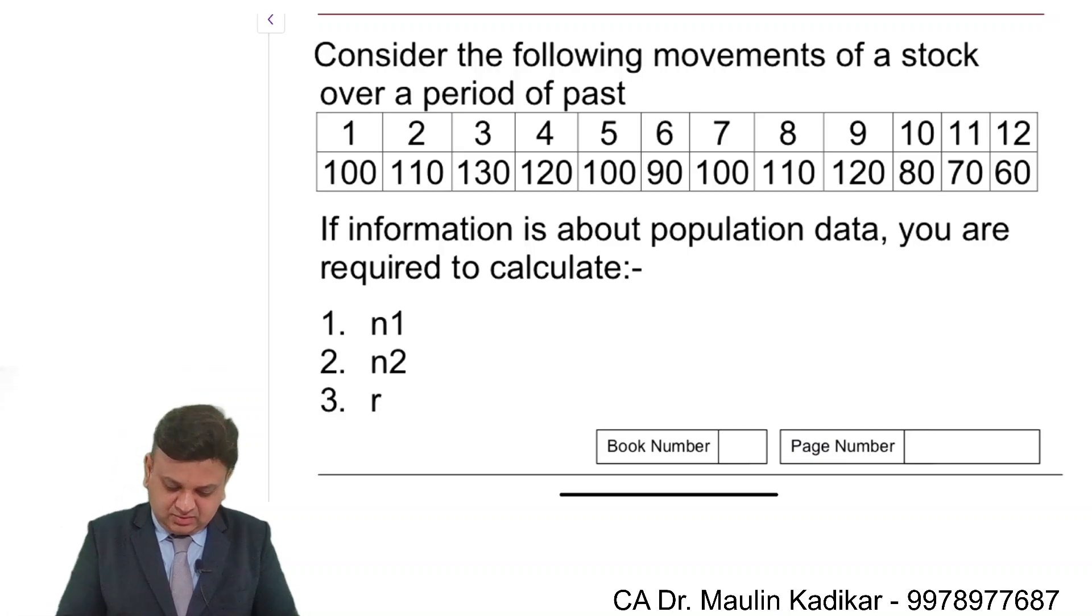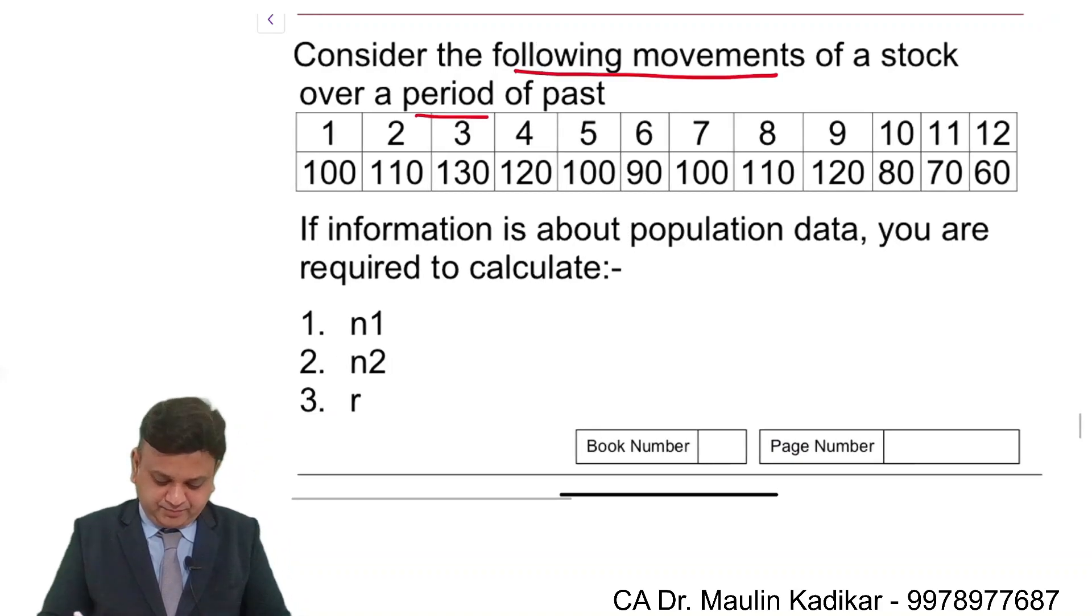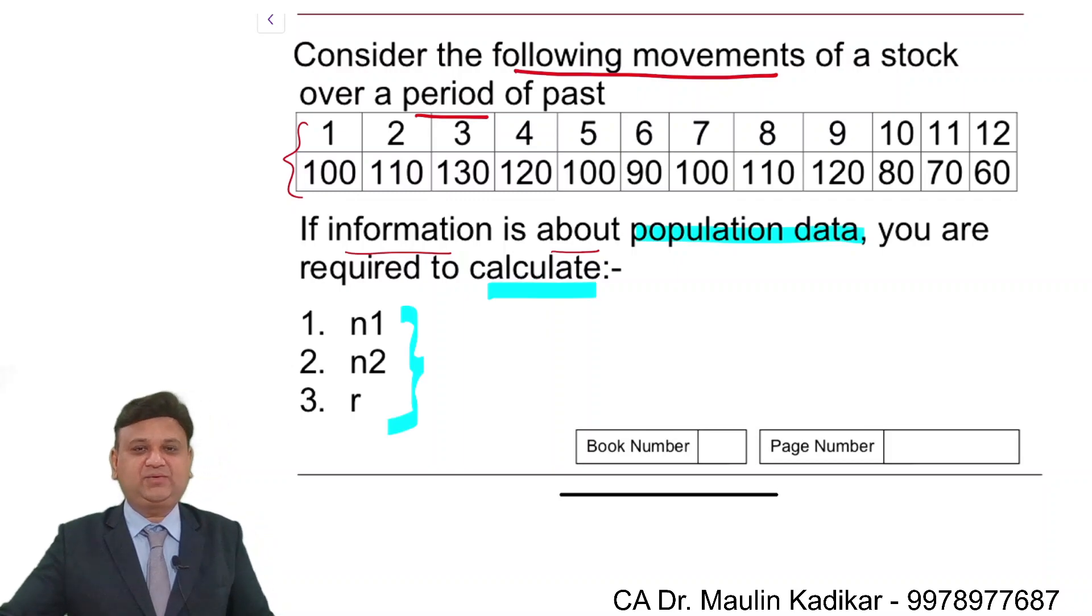Let us see the next question. Consider the following movement of the stock over a period of past day 1 to day 12. Closing prices are provided. If information is given about population data, you are required to calculate n1, n2, and r. That is the question.